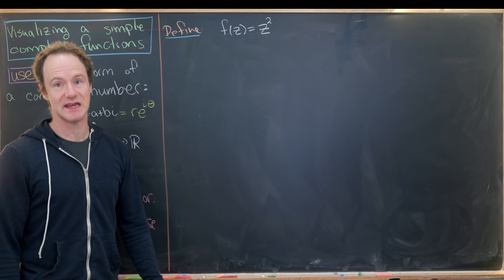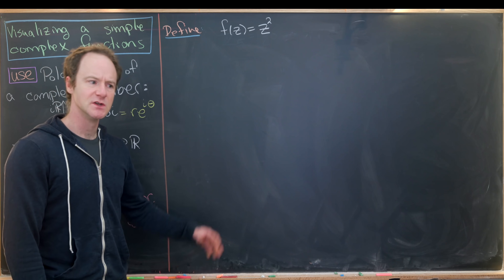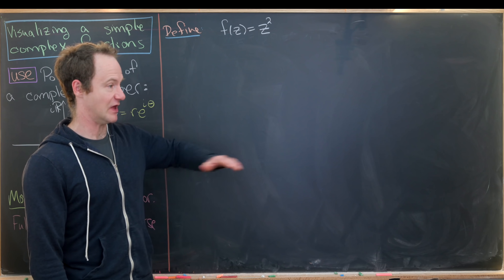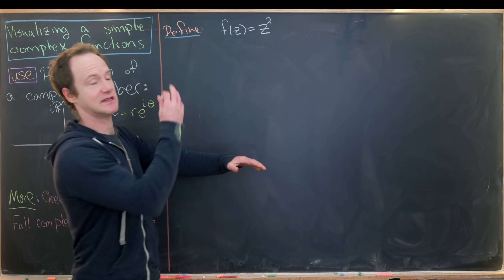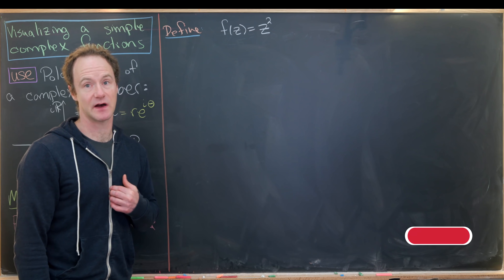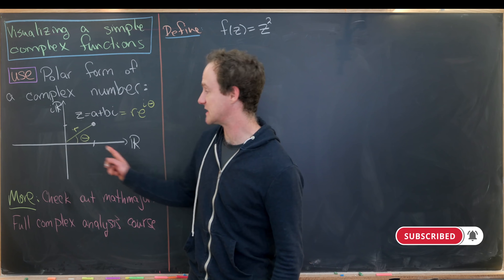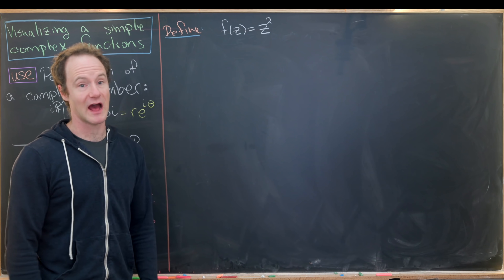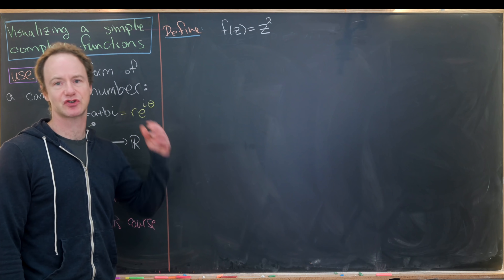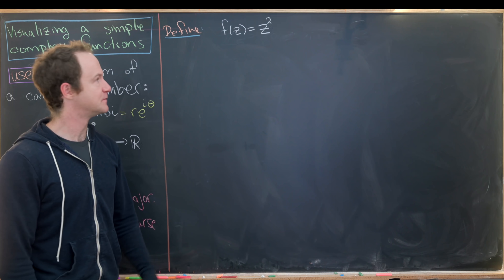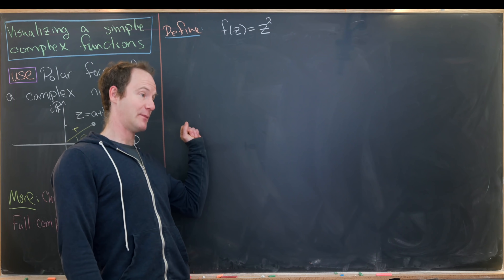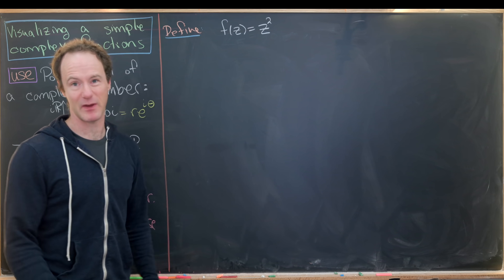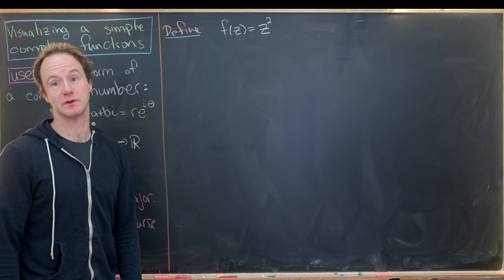The function we want to look at today is f(z) = z². If we were working with real numbers like f(x) = x², we would just graph that in the Cartesian coordinate plane with an input axis and an output axis. But we can't quite do that with complex-valued functions, because our input is an entire plane and our output is also an entire plane. So the proper graph is actually four-dimensional. We've got to have some other strategy, so let's work through examples of what happens to points and lines under this map.